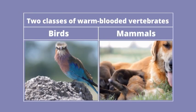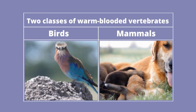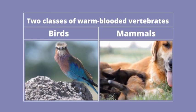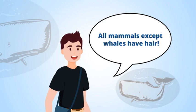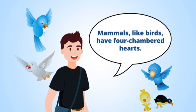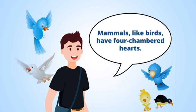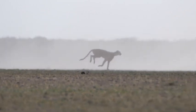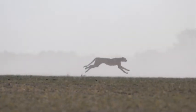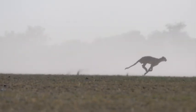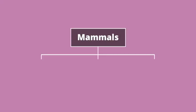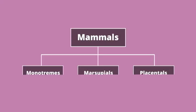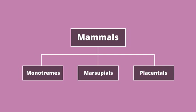Mammals are a class of vertebrates whose young are nourished with milk from their mother's mammary glands. All mammals except whales have hair. Mammals, like birds, have four-chambered hearts. Many mammals can move fast because their legs are more directly under their bodies, unlike those of amphibians and reptiles. Mammals are divided into three groups: the monotremes, marsupials, and placentals.